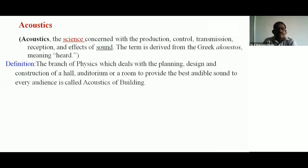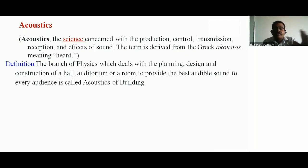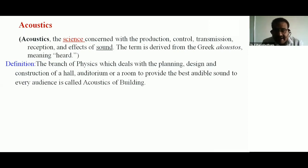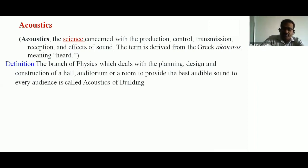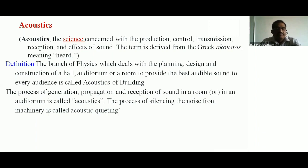The definition: the branch of physics which deals with the planning, design, and construction of a hall to provide the best audible sound to every audience — that is called acoustics of building. Another definition you can observe: the branch of physics which deals with the planning, design, and construction of a hall to provide the best audible sound to every audience is called acoustics of building.